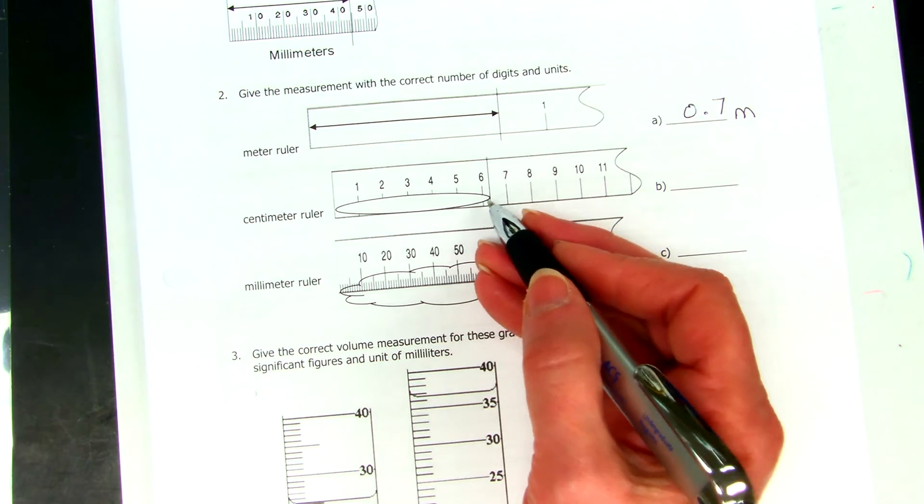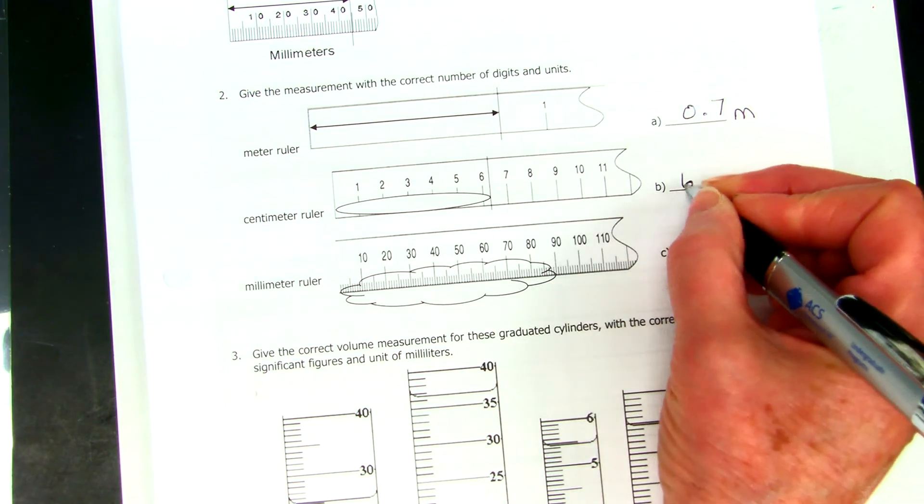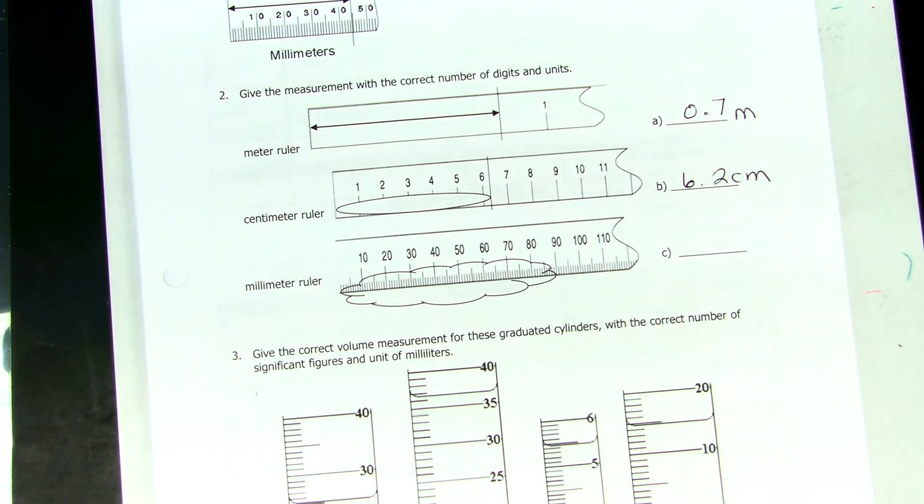What's that same thing look like? Well, this one in centimeters, Ryan. 6.2 centimeters. In chemistry, we usually have units with our numbers.